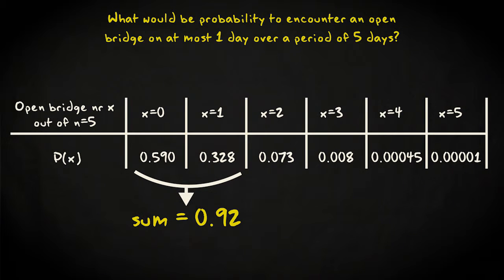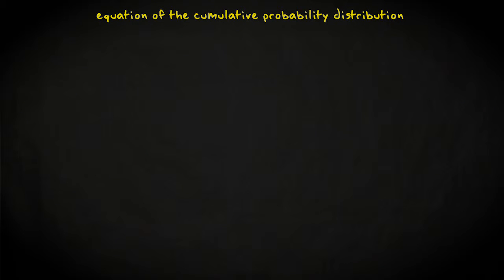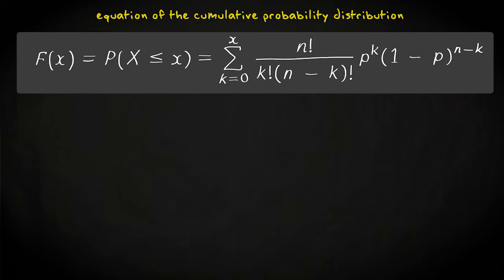To answer this last question, we may use the cumulative binomial probability distribution, giving the total probability of all outcomes lower than or equal to a given number of successes. The equation of this cumulative probability distribution is as follows. It's almost identical to the binomial probability mass function, but now with a summation sign in front, and all x is replaced with the symbol k, to increment the value for the number of successes from 0 up to x in the summation.